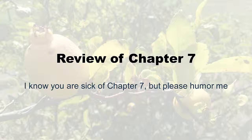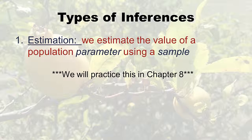From chapter seven, remember there were different types of inferences, and one called estimation — we said we'd practice this in chapter eight. Estimation is where we estimate the value of a population parameter using a sample. In this situation with confidence intervals, we're trying to estimate mu using a sample, because mu is a population parameter. If you just have a sample, you don't know what mu is, but we try to estimate it from our sample. That's what chapter eight is really about.